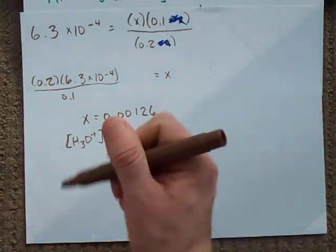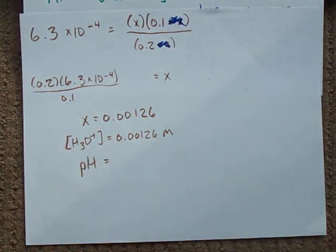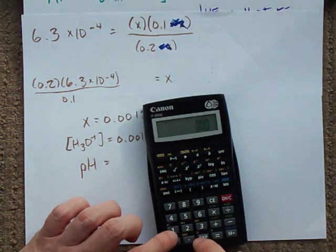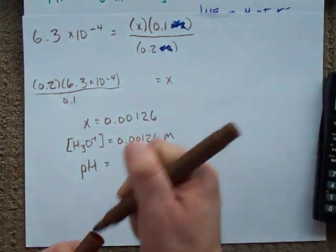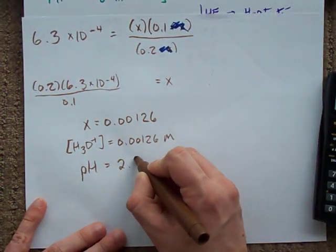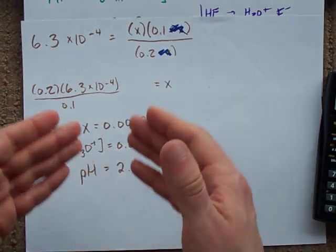If we want to, we can find the pH by taking the negative log of that number, 0.00126. The negative log of that gives me 2.9. And so, the pH of this buffer solution is 2.9.